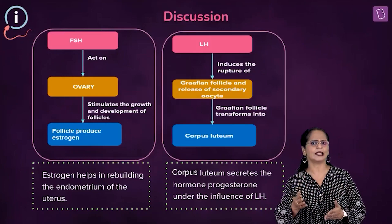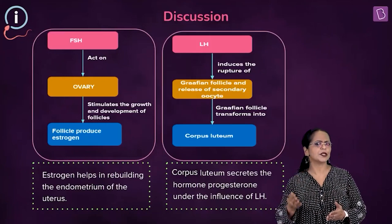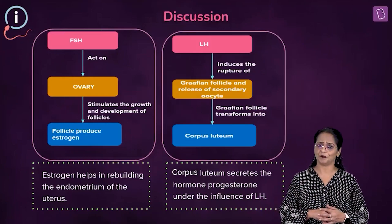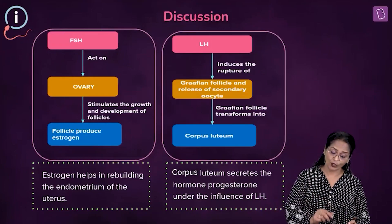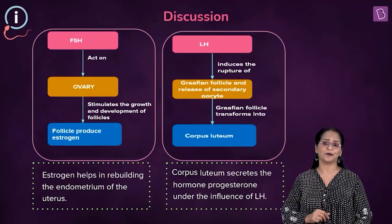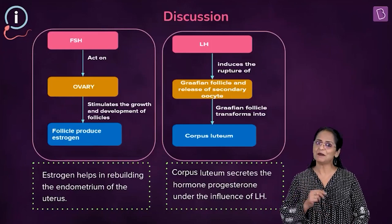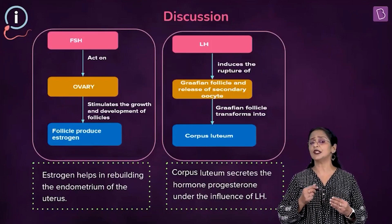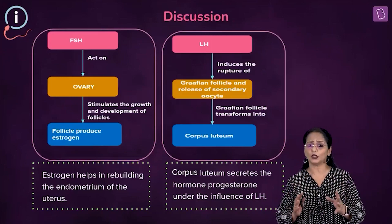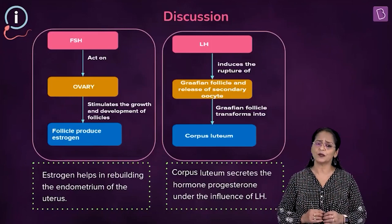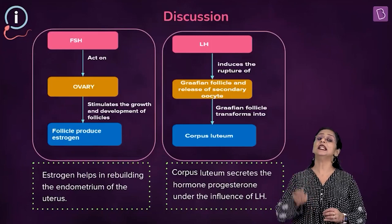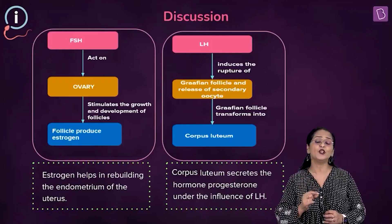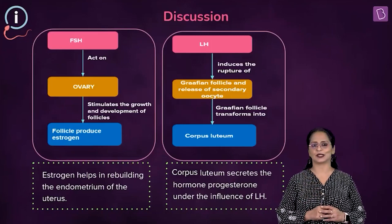The primary follicle becomes secondary, secondary becomes tertiary, tertiary becomes the Graafian follicle. The follicles produce estrogen, the female sex hormone. Apart from the other roles that estrogen plays, estrogen helps in rebuilding the endometrium of the uterus.